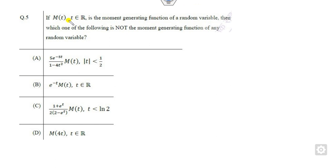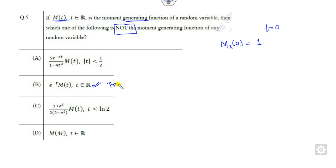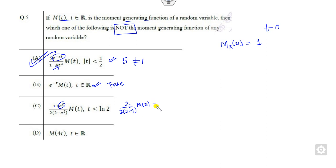Question 5 is about the moment generating function (MGF). The key property is: when you substitute t = 0, M(0) must equal 1. Checking each option: for option A, substituting t = 0 gives 1 + 0 = 1... but wait — checking more carefully, M(0) gives 5, not 1, so this is not a valid MGF. Options C and D satisfy M(0) = 1. Therefore the wrong answer — the one that is not an MGF — is A.